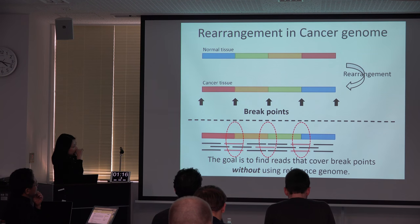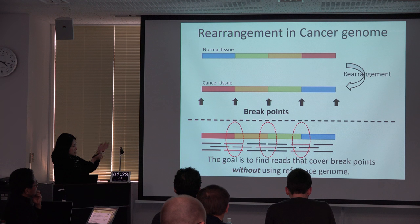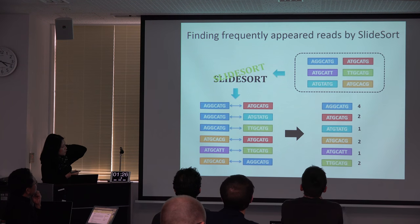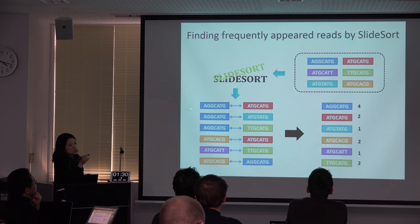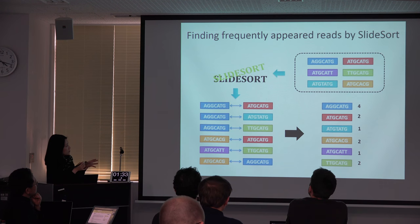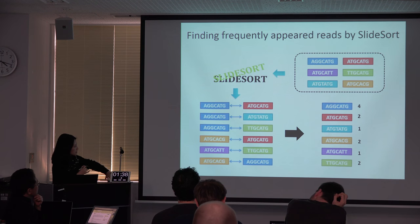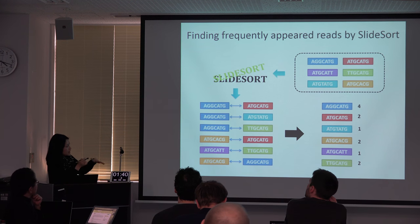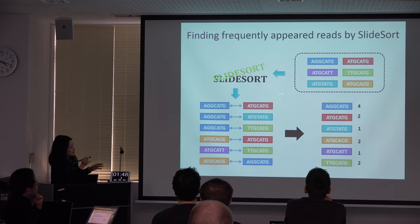One of the features of our method is not to use the reference genome — just compare two sets of reads. We achieve this goal by using all-pairs similarity search. If you scan and find all similar pairs and count the similar reads, you can count the similar patterns which appear in that set of short reads.